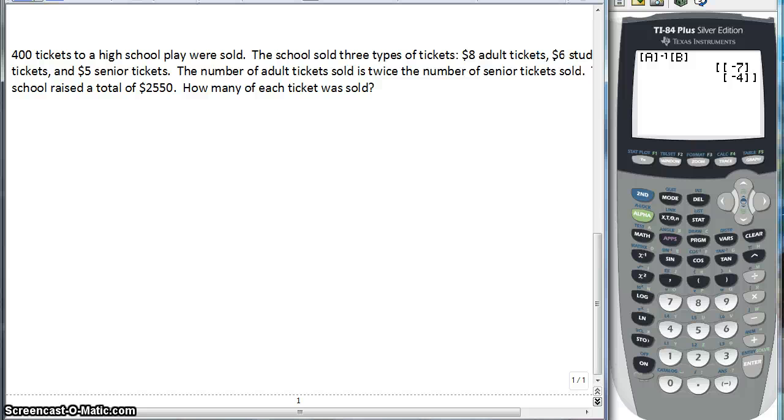It doesn't matter how good you are at solving an algebra equation or even if you can type in the calculator now and have your calculator solve a system for you. If you write the wrong equations, you're going to get the wrong answer. So we have tickets. That's the stuff part of this. We have some stuff. We have adult tickets, student tickets, and senior tickets, and we sold 400 tickets.